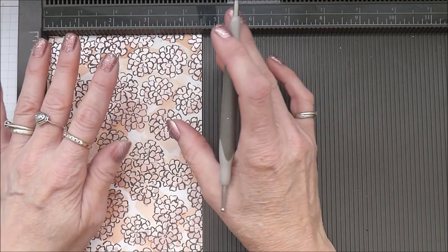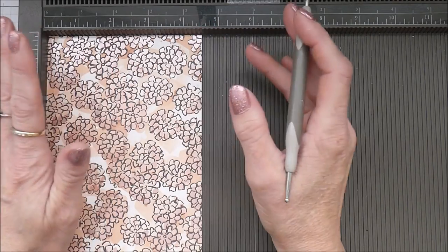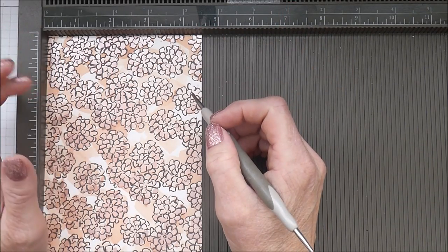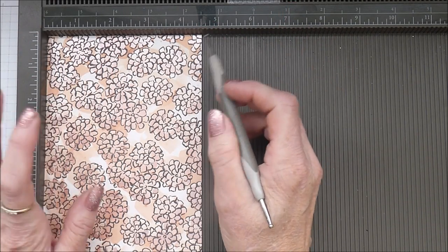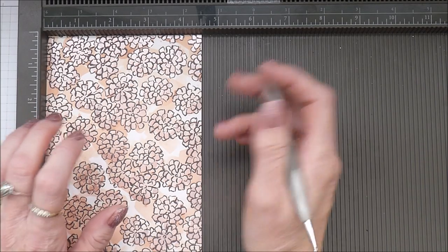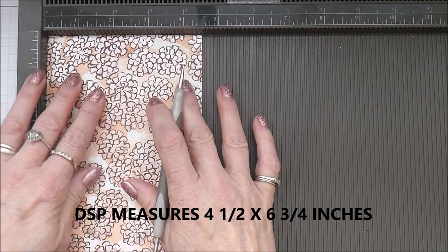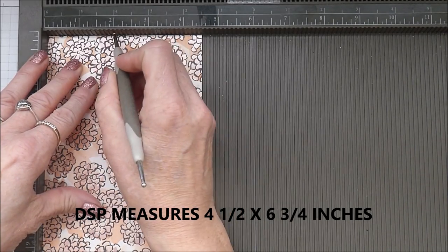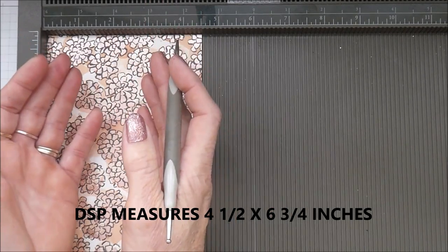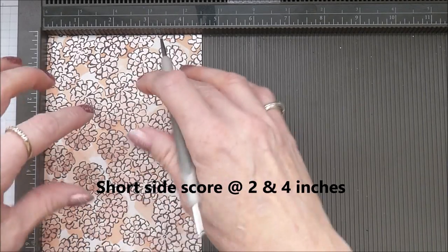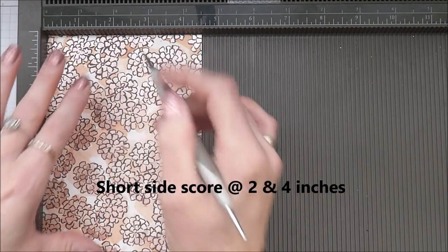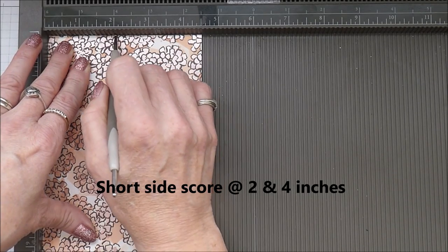So your designer series paper or your cardstock if you're working in card needs to measure four and a half inches by six and three quarters. And on the short side, you're going to score and I'm going to be scoring on the side that I want to show. So this is going to be the outside of my box. So I'm scoring at two inches.